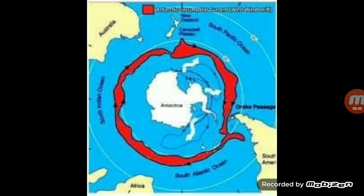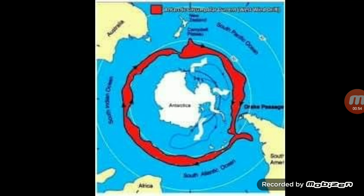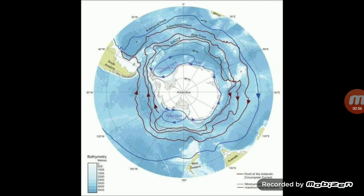Now we will discuss the main ocean currents of the South Atlantic Ocean in detail. First is the West Wind Drift or Circumpolar Antarctic Current. This current flows along the Antarctic continent from west to east. It is the only current in the Southern Ocean, between 40 degrees south to 60 degrees south latitudes, that circumnavigates the whole globe.